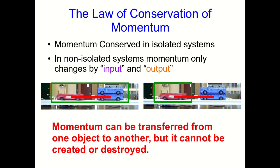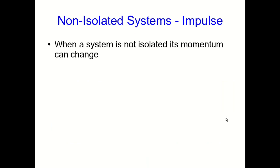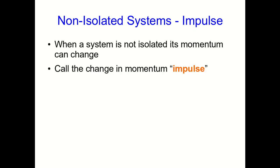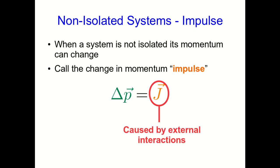We can state a very general law: momentum can be transferred from one object to another, but it can never be created or destroyed. This is the law of conservation of momentum. It's incredibly well verified by huge numbers of experiments in all sorts of different situations, and we believe it to be universal. When a system isn't isolated, its momentum can change only by input and output — it's exchanging momentum with the environment. We call the change in momentum of the system the impulse, represented by a capital J. For now, we know that impulse must result from external interactions, and once we've talked more about interactions later in the course, we'll be able to say quite a bit more about it.